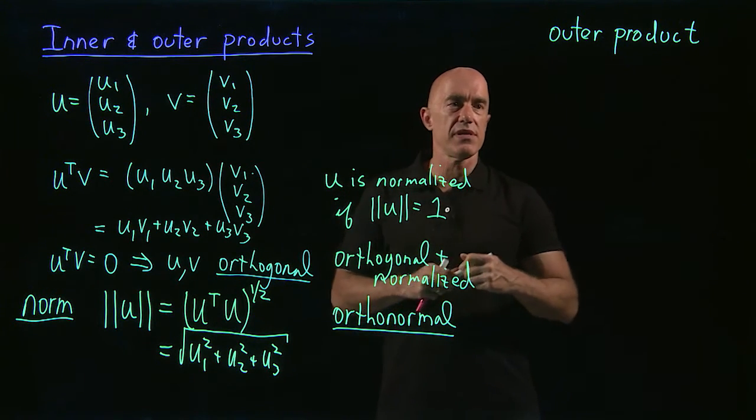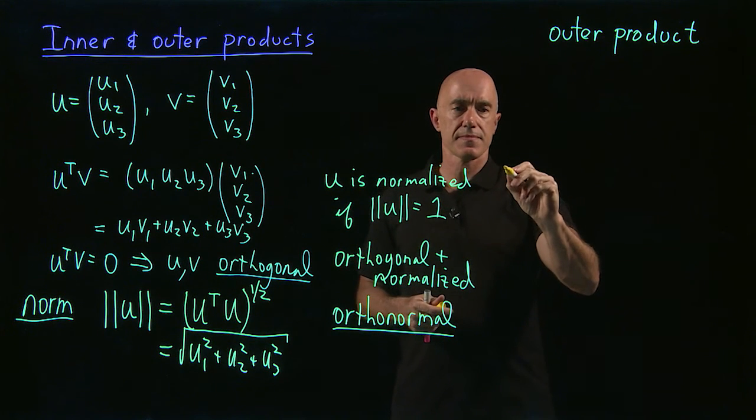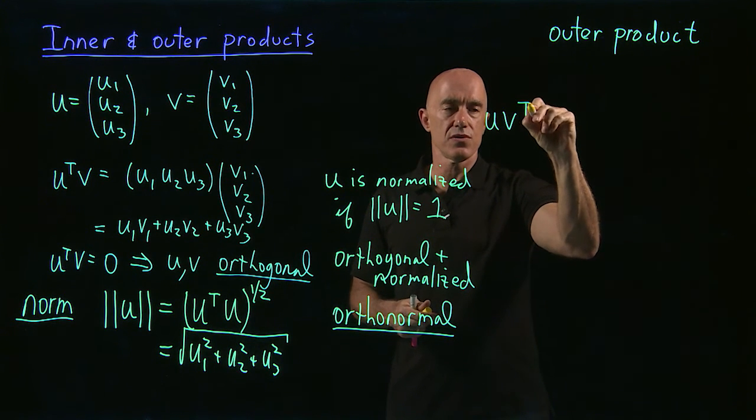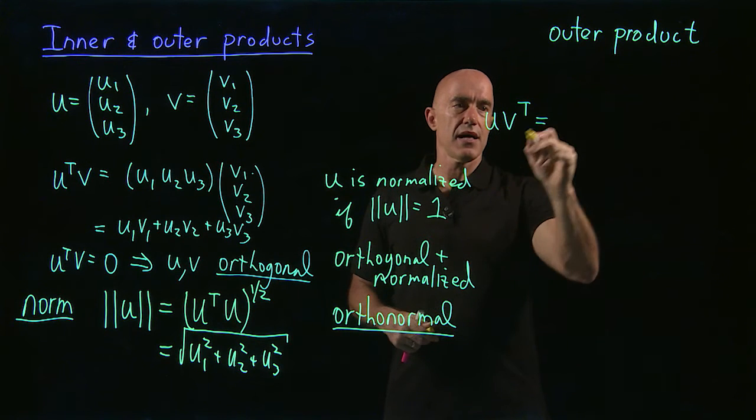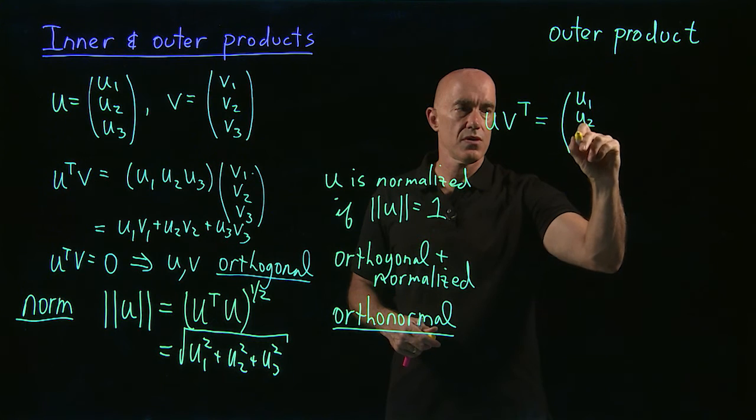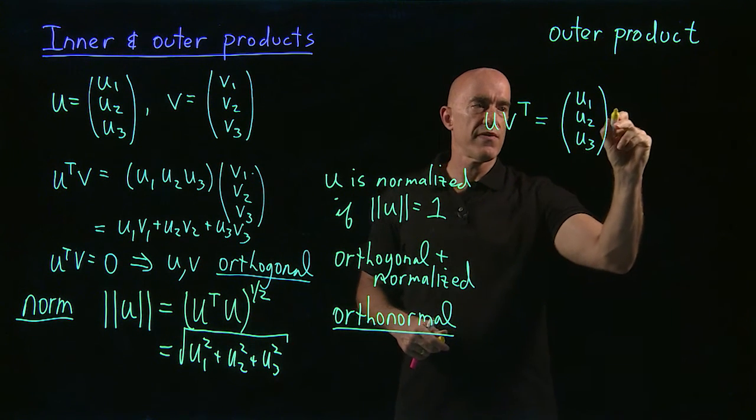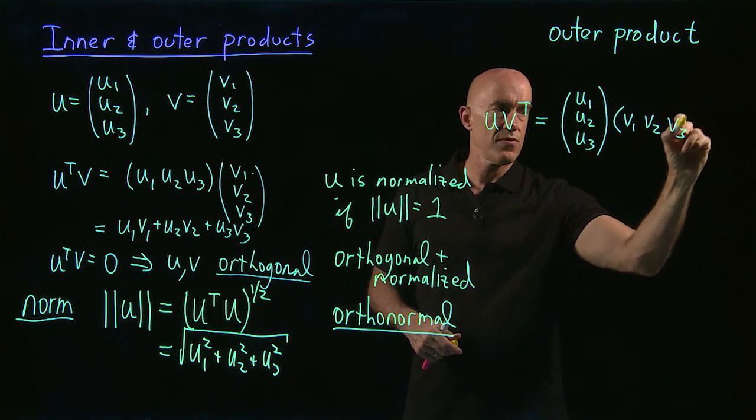But what would happen if we did u v transpose? So u is a column vector, right? So u1, u2, u3. And v transpose then is a row vector. So that would be v1, v2, v3.